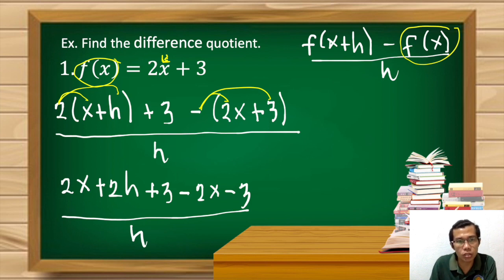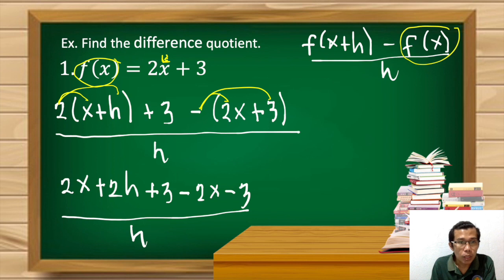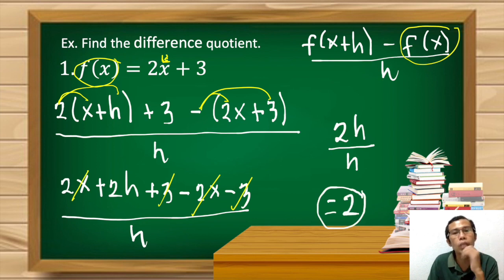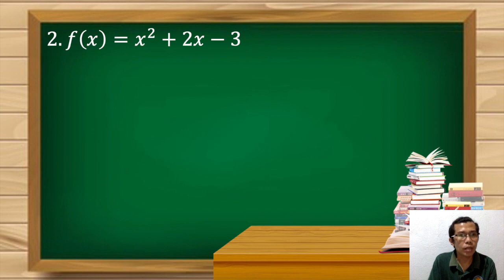On our numerator we have a lot of terms in common, so we apply addition and subtraction. 2x minus 2x is zero, so we cancel that. Also 3 and negative 3 is zero, that cancels too. We're simply left with 2h divided by h, which is just 2. So that is our answer for Example 1.